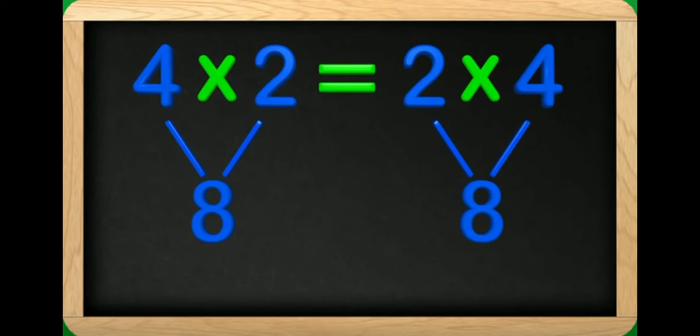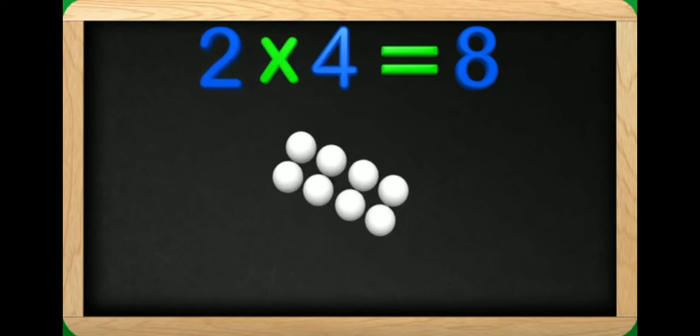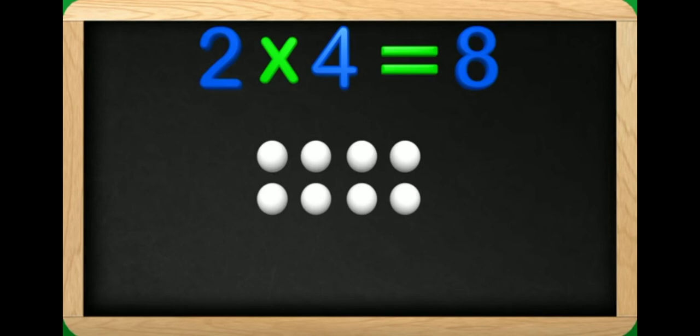4 2s are 8 or 2 4s are 8. Let us arrange the dots, 4 dots, 2 times. So again here we are getting 8 or 2 dots 4 times if we are taking, that also we are getting 8 only. So here we can say that commutative property satisfied here.